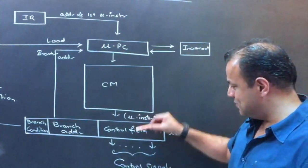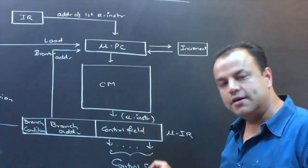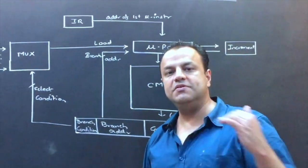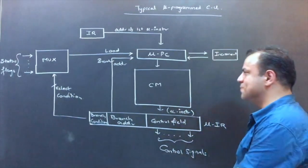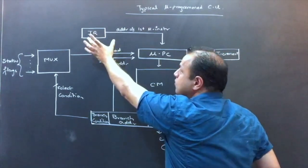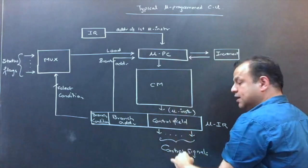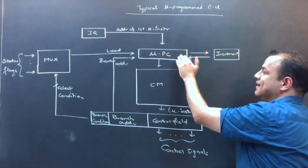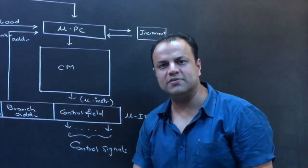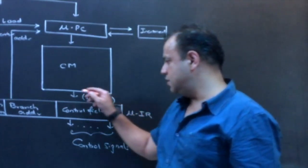After one micro instruction, we simply go to the next one — the address just has to get incremented. So once a micro instruction is executed, MUPC gets incremented, giving the address of the next micro instruction. You fetch it, release control signals, MUPC gets incremented again. This cycle continues until the instruction is complete, then we start the next instruction and repeat. This is also called SLM — Straight Line Micro Program — in some textbooks.